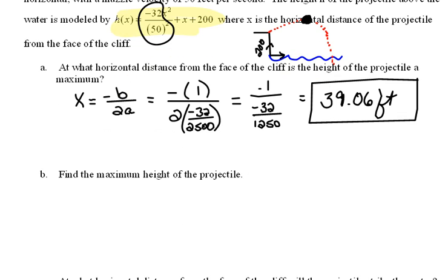Now, the next part of this says find the maximum height of the projectile. Well, our height function is here, so we can just go ahead and evaluate that height function for an x value of 39.06 feet.